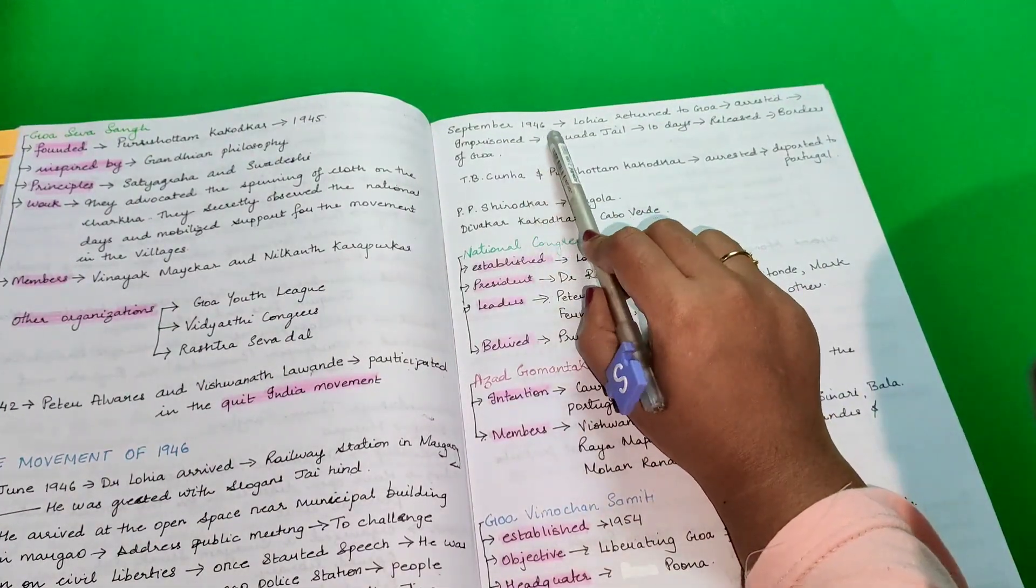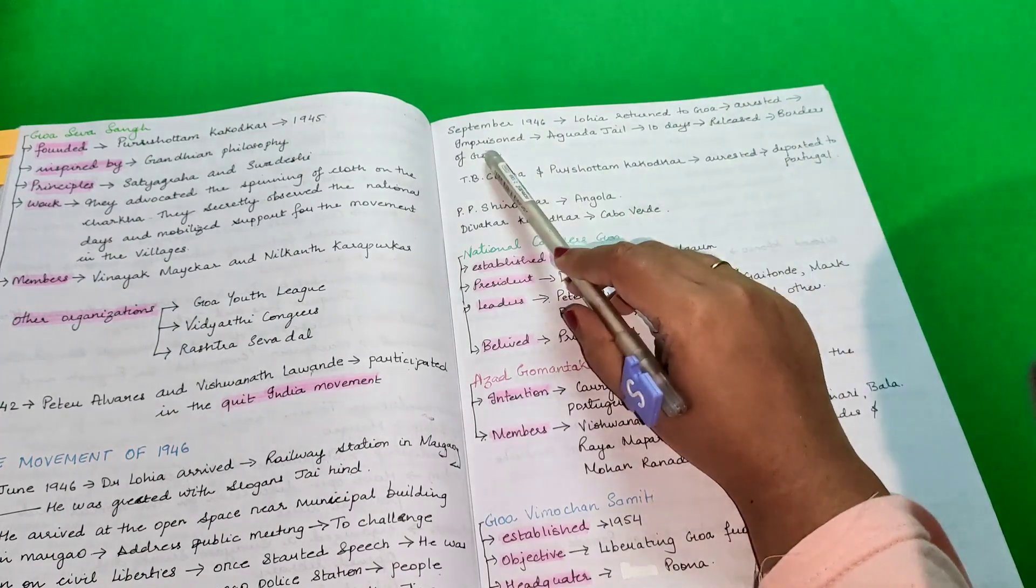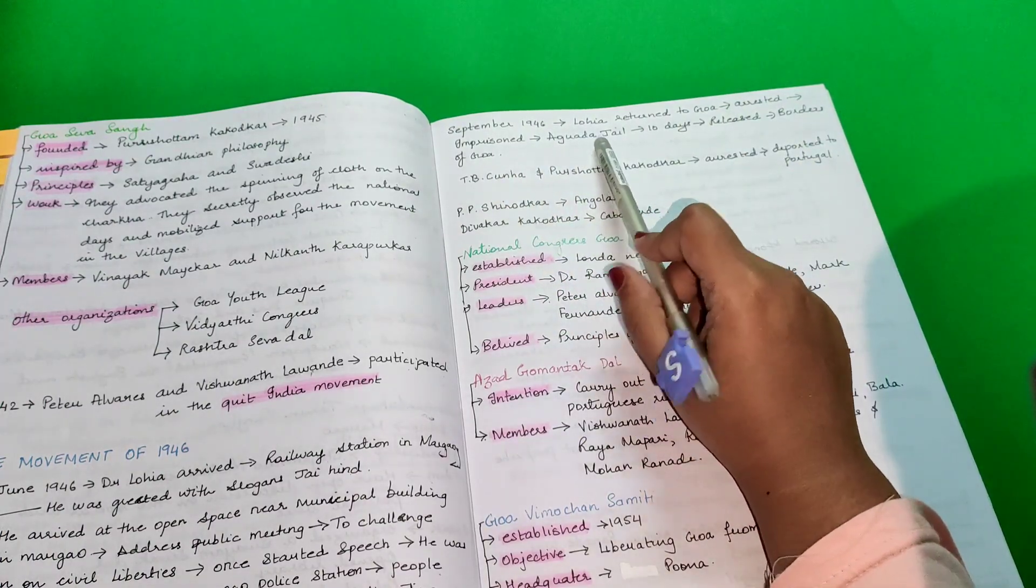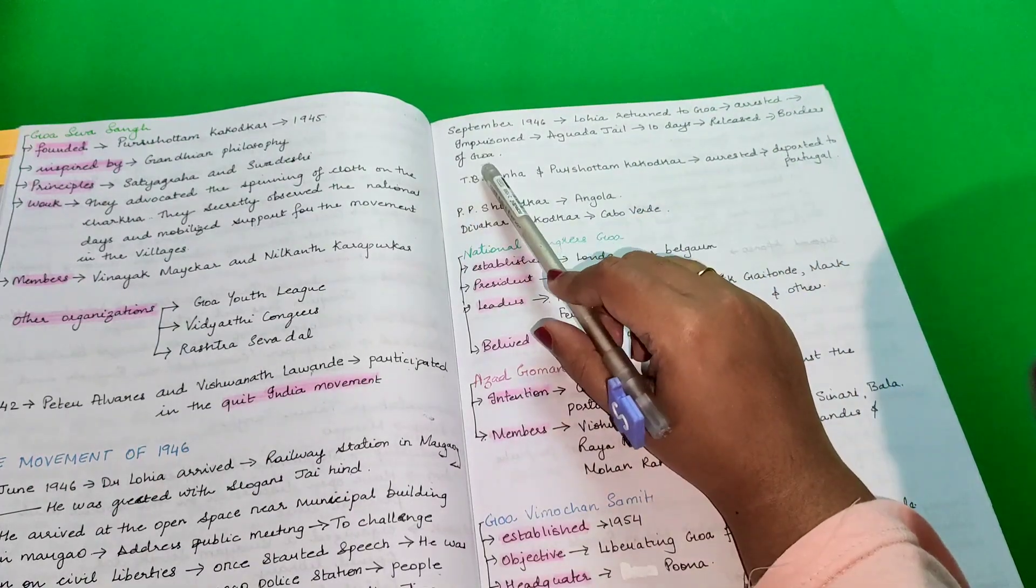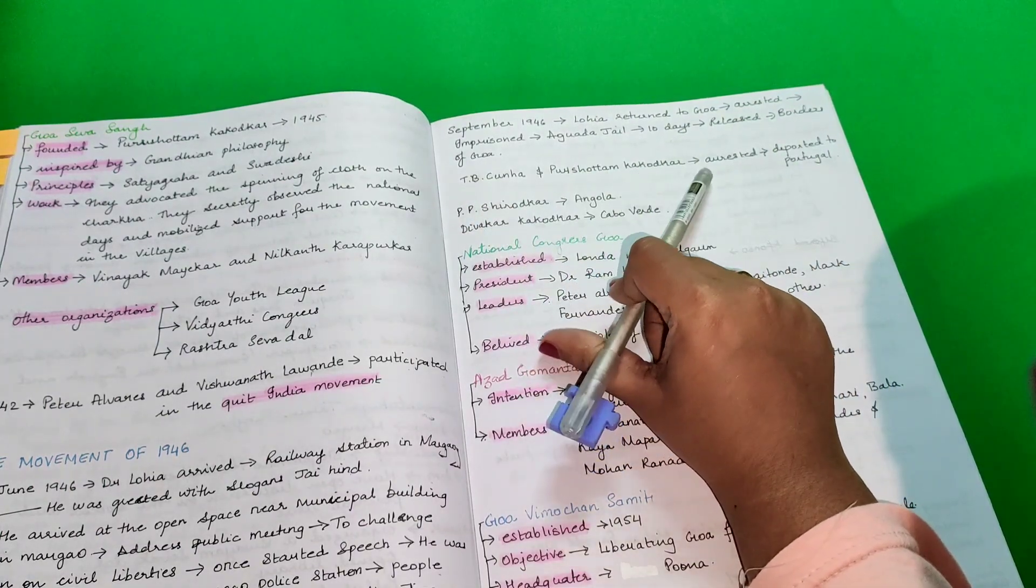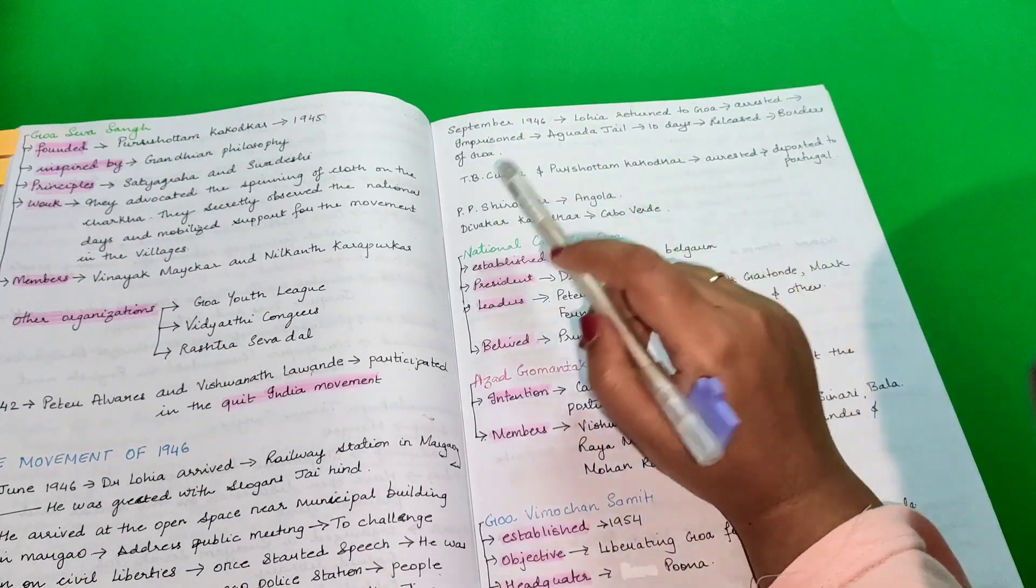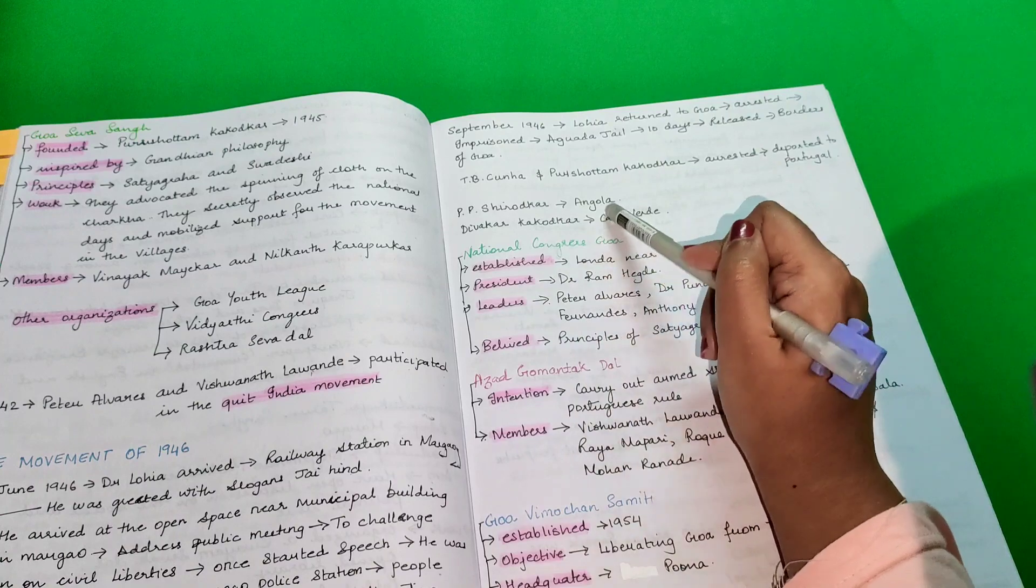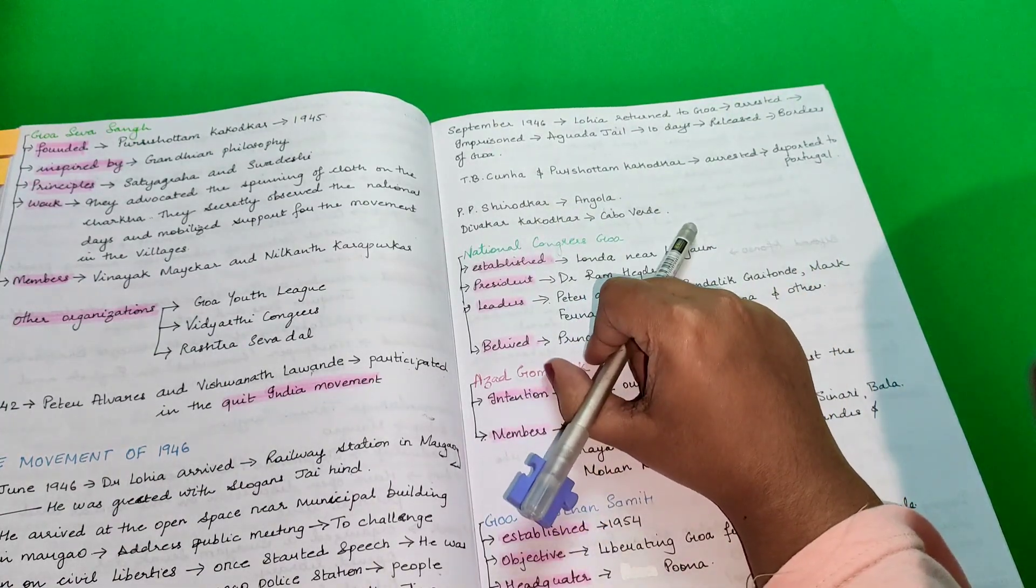In September 1946, Loya returned to Goa and he was arrested and imprisoned at Aguada jail for 10 days. After the 10 days, he was released on the borders of Goa. T.B. Cunha and Purushottam Kakodkar were arrested and deported to Portugal. P.P. Shirodkar was put in Angola jail and Divakar Kakodkar in Cabo Verde.